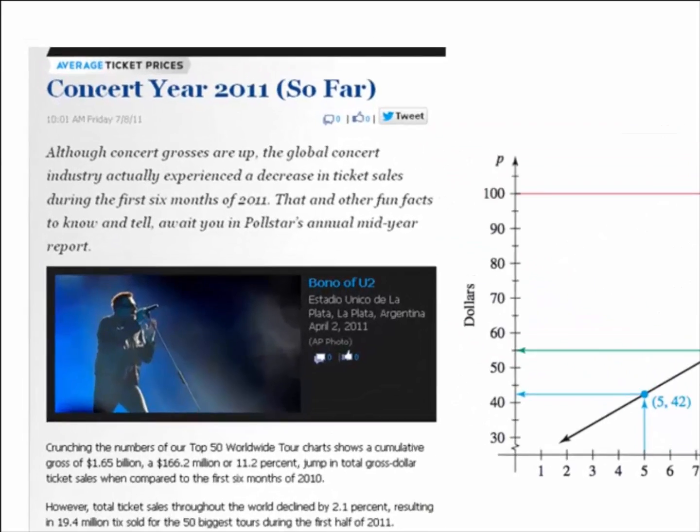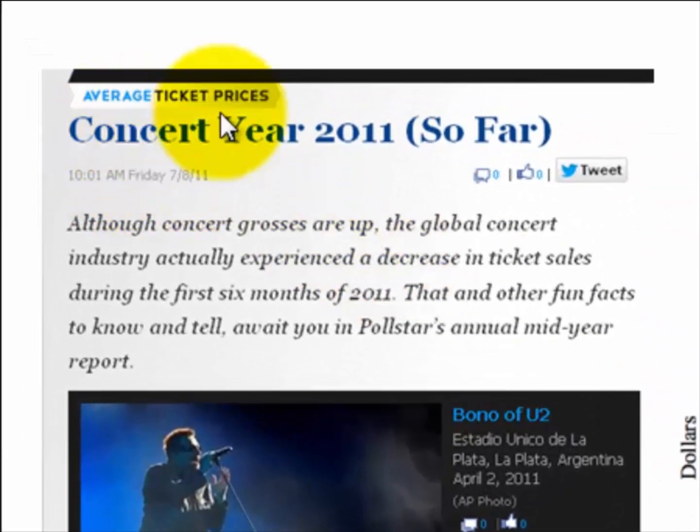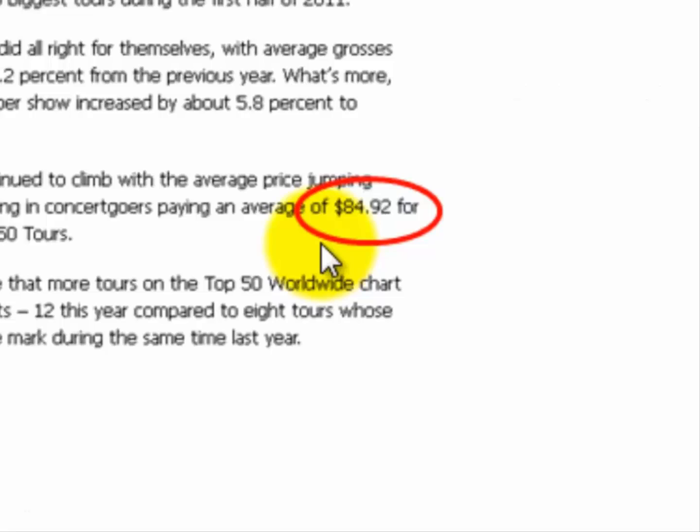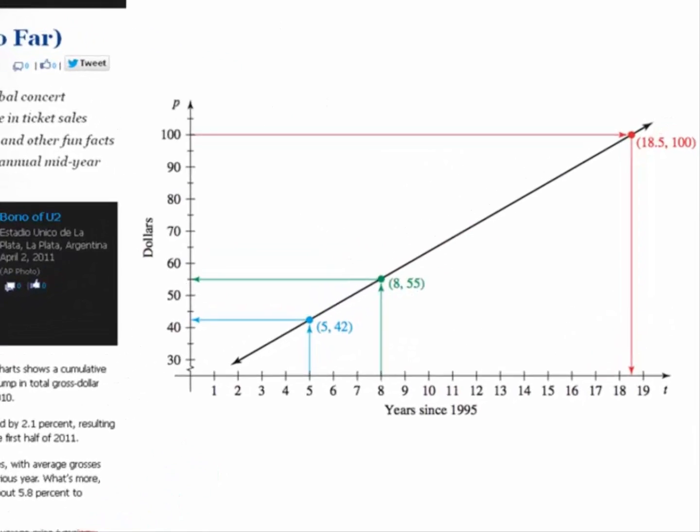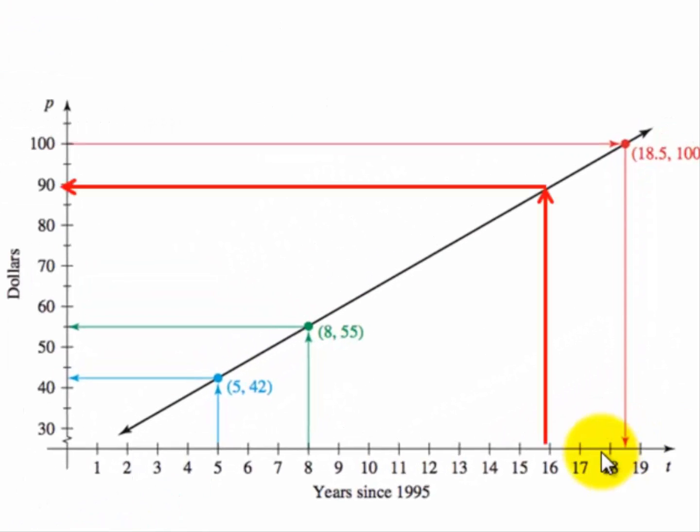Let's use this same model. This was the average ticket price in the year 2011, and according to the top 50 concerts, the average ticket price was $84.92. Now let's see what the model predicted. So in 2011, that is 16 years beyond 1995. So when t is 16, the model, the line, is predicting looks like about $89, $90. We'll say $89.